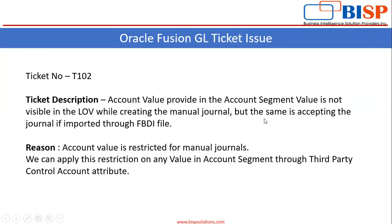The ticket number is T102, and the ticket description is: an account value provided in the account segment value is not visible in the LOV while creating the manual journal. But the same value is accepted if the journal is imported through an FBDI file.